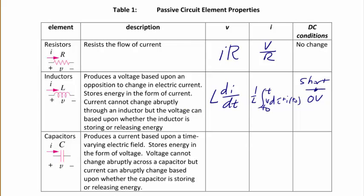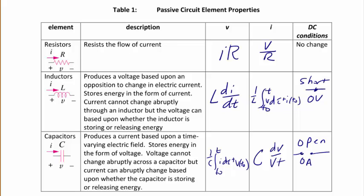A capacitor is made of two plates with a dielectric in between, and it produces a current based upon a time-varying electric field. It stores energy in the form of voltage. Voltage cannot change abruptly across a capacitor, but current can abruptly change based upon whether the capacitor is storing or releasing energy. For a capacitor, the current is I equals C dV/dt. To find the voltage, it's 1/C times the integral from T0 to T of I dτ, plus the initial voltage stored in the capacitor, if any. Under DC conditions, a capacitor looks like an open circuit because under constant voltage conditions, the derivative of a constant is zero, making the current zero amps, which represents an open circuit.